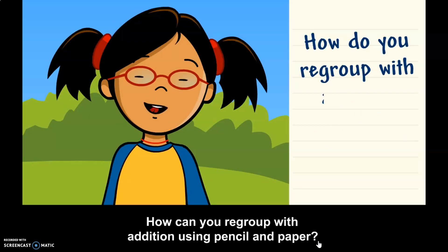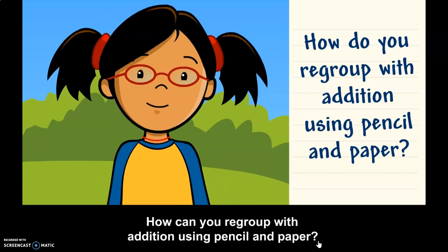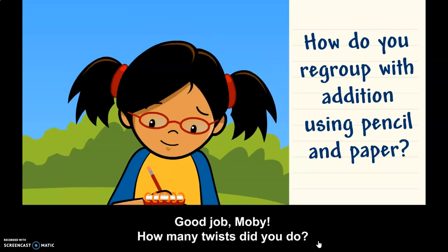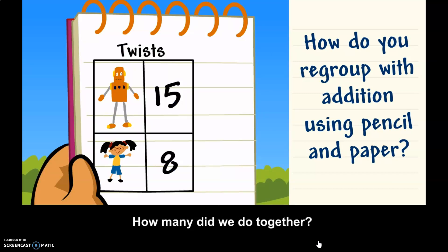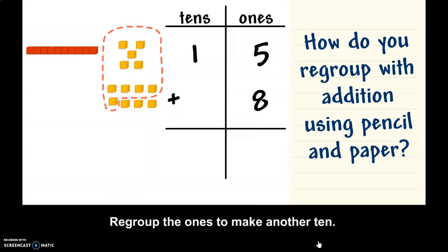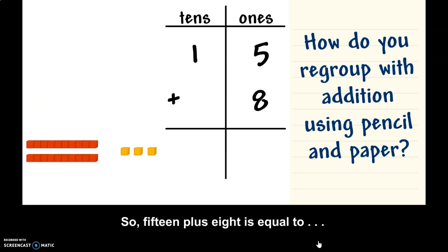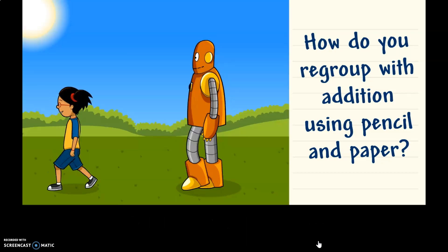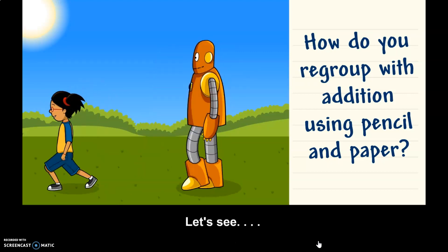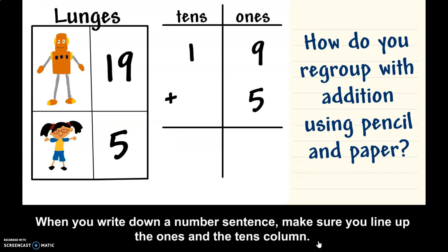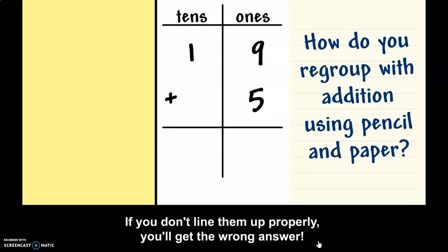How can you regroup with addition using pencil and paper? Good job, Moby. How many twists did you do? How many did we do together? Regroup the ones to make another ten. There's three ones and two tens. So, 15 plus 8 is equal to 23. Let's see. How many lunges did we do together? When you write down a number sentence, make sure you line up the ones and the tens column. And if you don't line them up properly, you'll get the wrong answer.